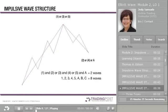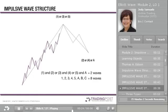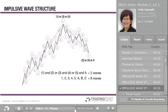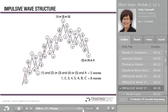In wave theory, this impulsive wave structure is called wave form. Whenever we look at wave form, we start with the larger time frame and count the basic 5-wave impulse move followed by a 3-wave corrective move, totaling 8 waves. Moving to a shorter time frame, 5 waves turn into 21 waves and 3 waves into 13 waves. One complete cycle has 8 waves and subdividing further, the next cycle has 34 waves followed by 144 waves.